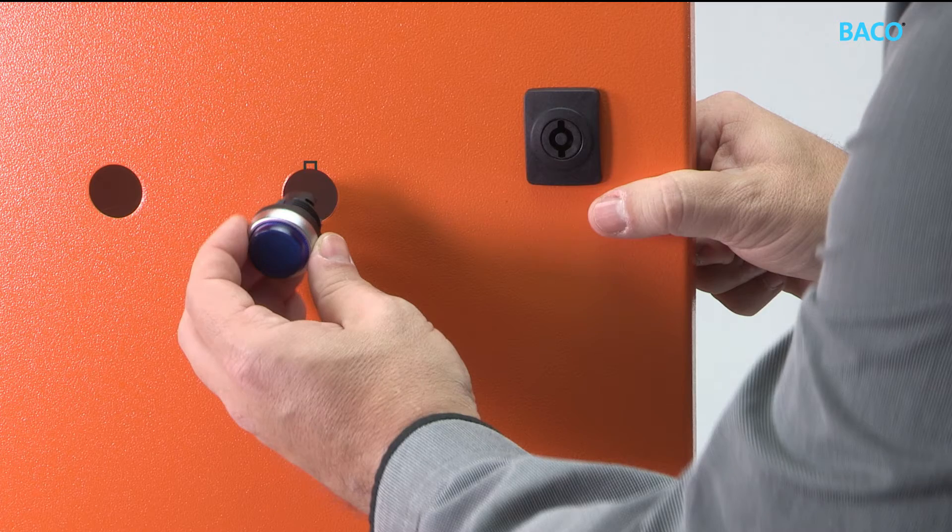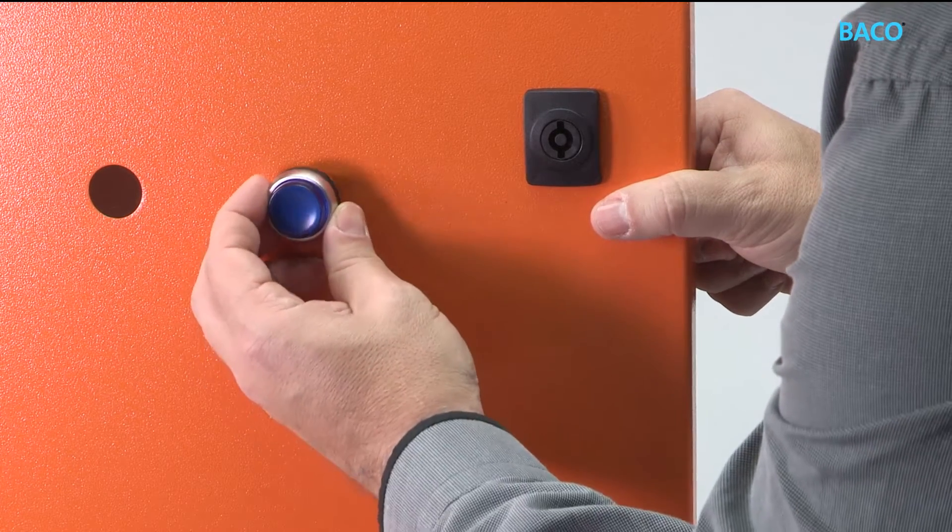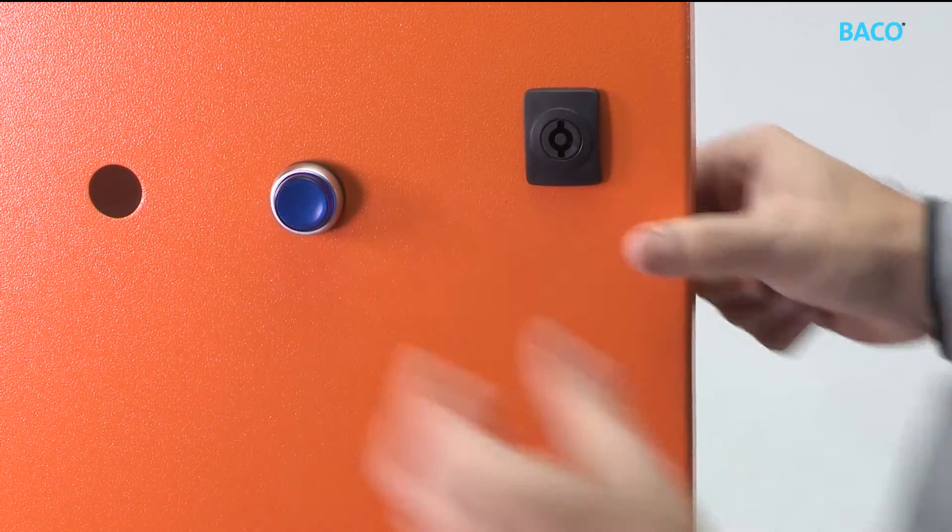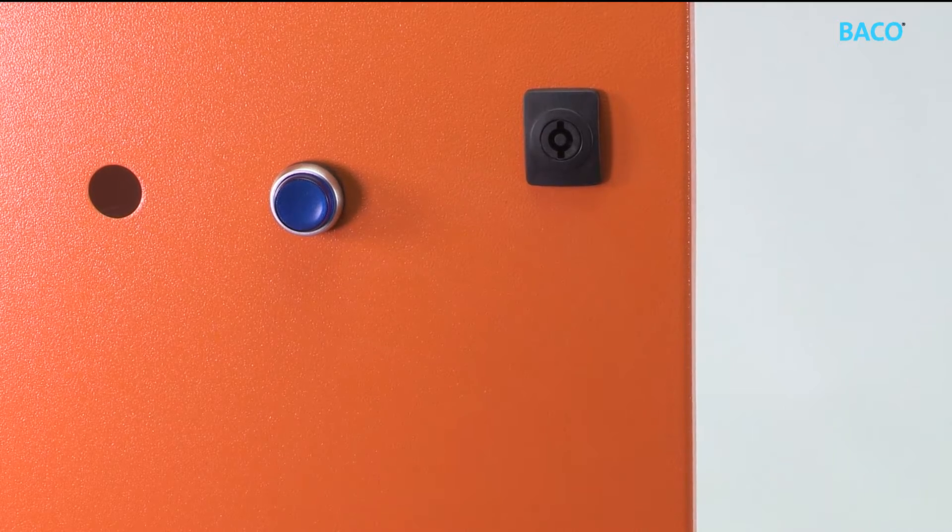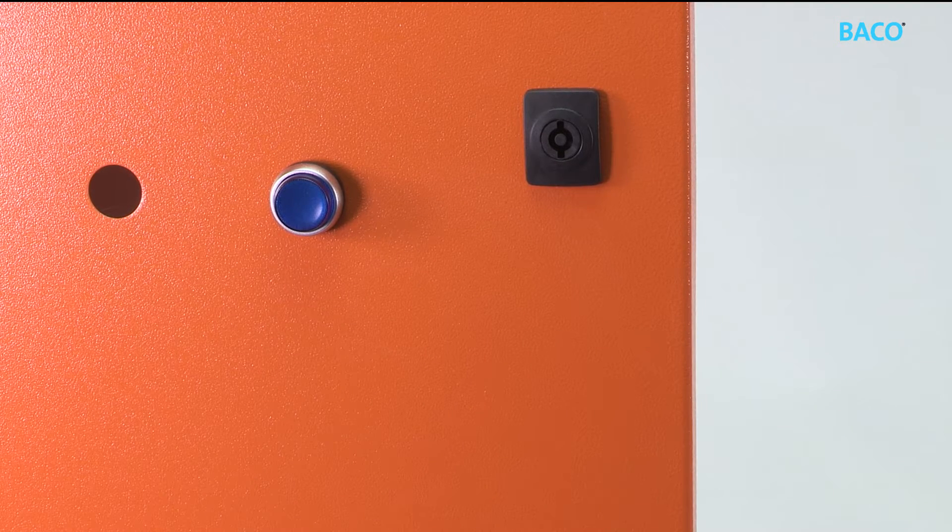Align the notch with the tab. Insert the head from the front of the panel, making sure the anti-rotation tab fits with the notch on your panel. The panel gasket enables one hand mounting.